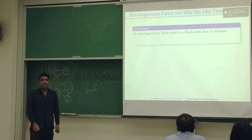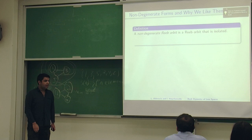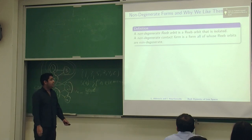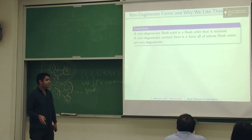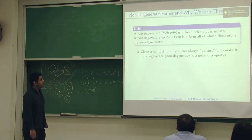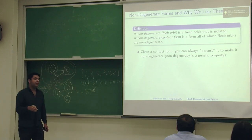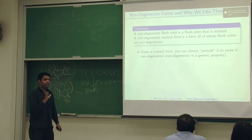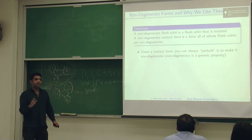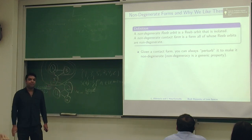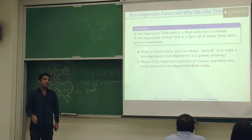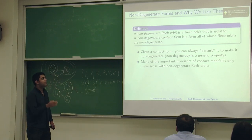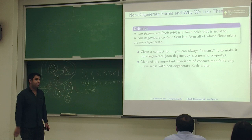To define a non-degenerate form, I have to define a non-degenerate orbit. That's just an orbit that's isolated. A non-degenerate form is a form all of whose Reeb orbits are non-degenerate. This is a generic property. Given a contact form, you can always perturb it to make it non-degenerate. Most contact forms are non-degenerate, but this is not a constructive process. If you want one, you have to make one. Why do we care? Because a lot of the important invariants I'm going to talk about later only make sense with non-degenerate orbits.